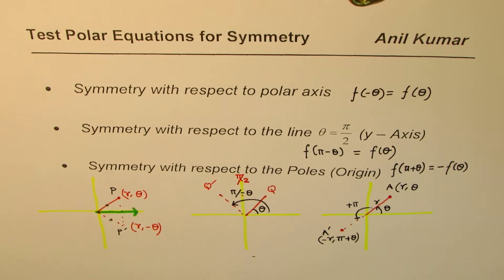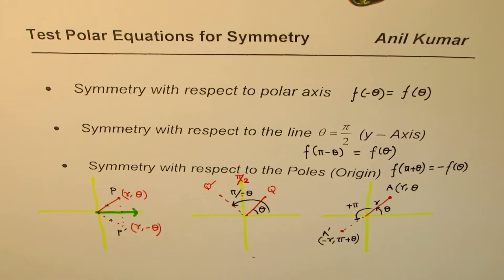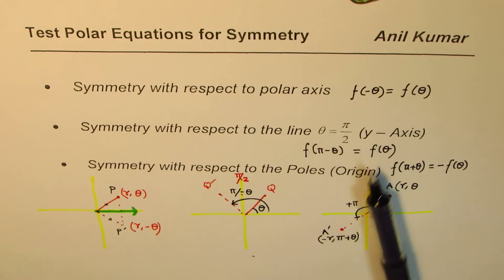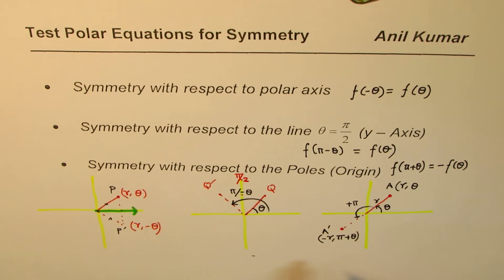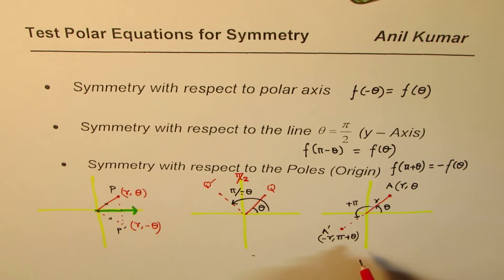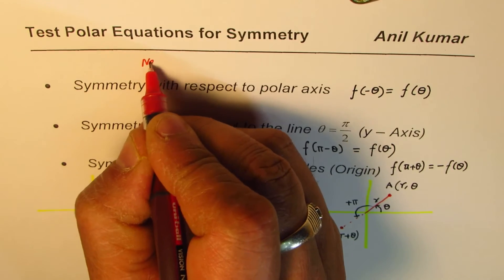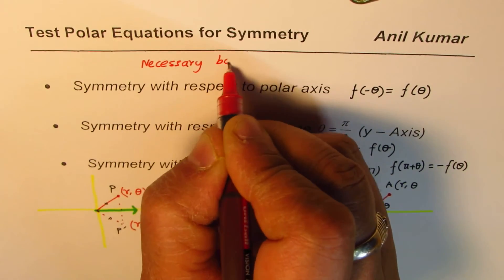These three symmetries help us sketch the graphs of polar equations on the plane. We will take a few examples in sketching such polar equations to see how symmetry helps us find the final graph without too many calculations. It is important to understand that these are necessary but not sufficient conditions.